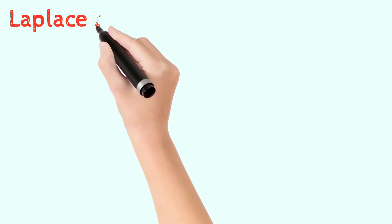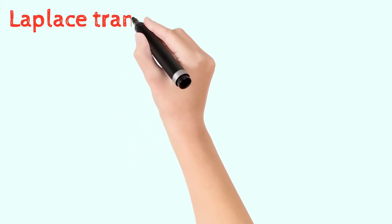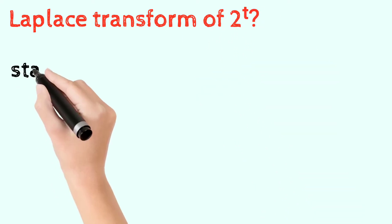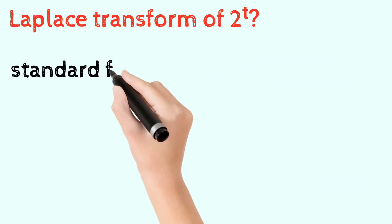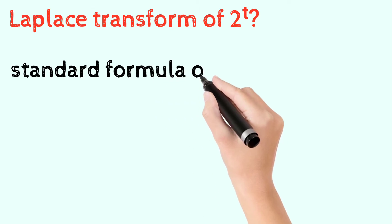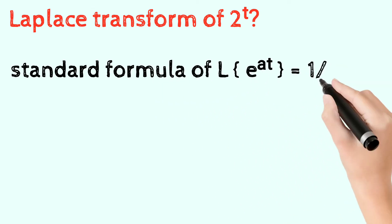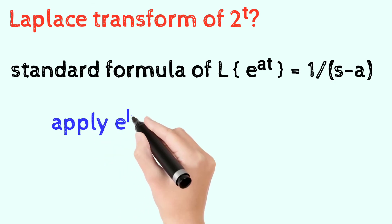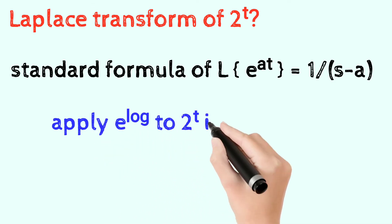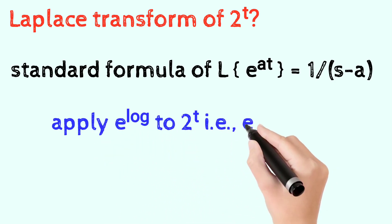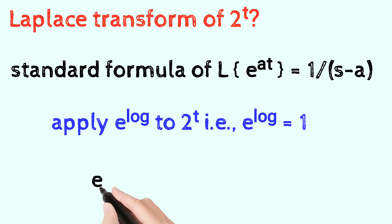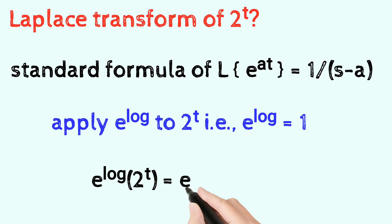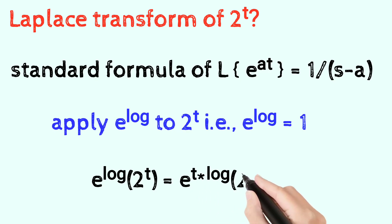Laplace transform of 2 to the power of t. We know the standard formula: Laplace transform of a to the power of a·t is 1 by s minus a. Applying this, a to the power of log 2 to the power of t equals a to the power of t into log 2.